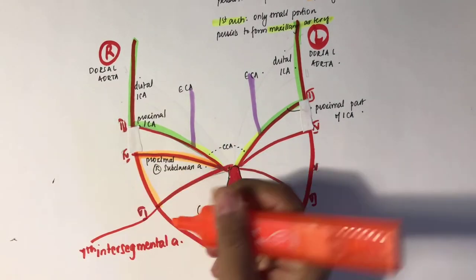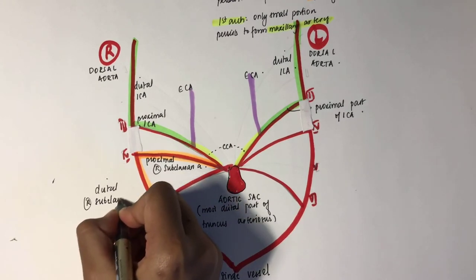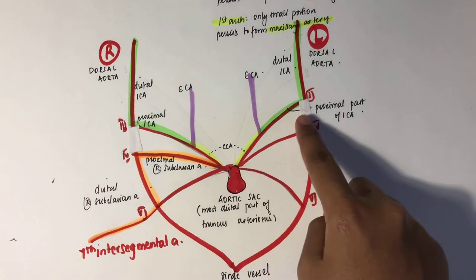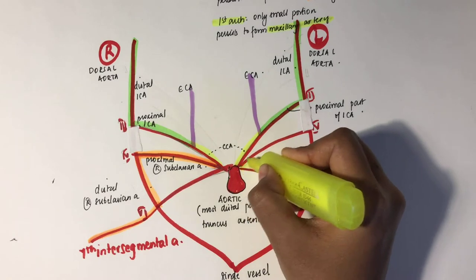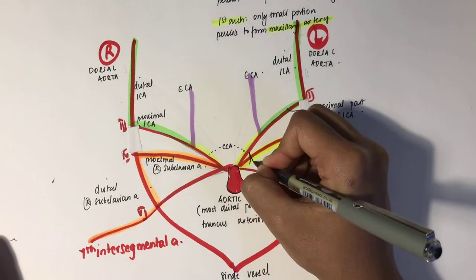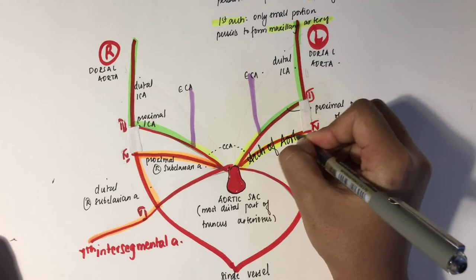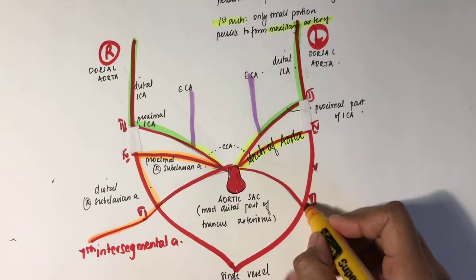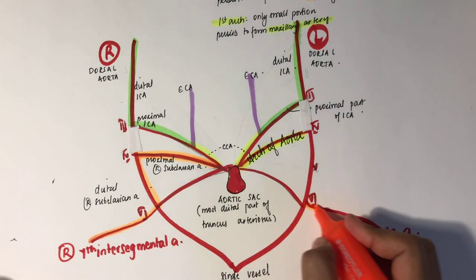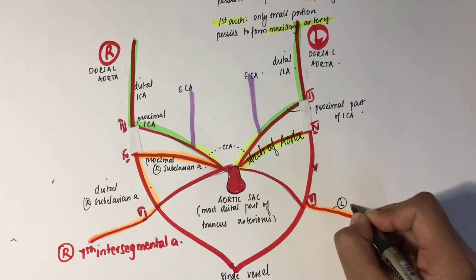The left fourth aortic arch forms the arch of the aorta. The left subclavian artery arises from the left seventh intersegmental artery.